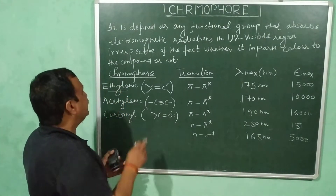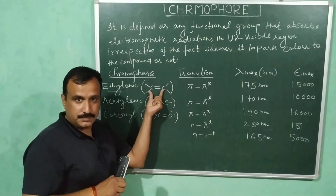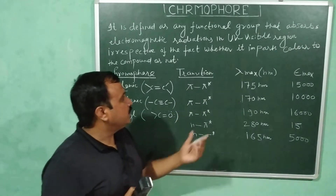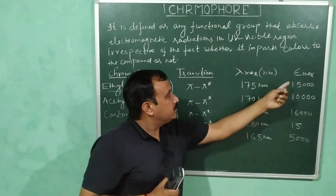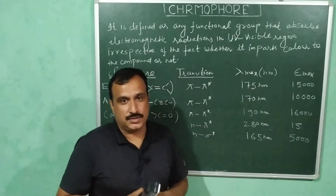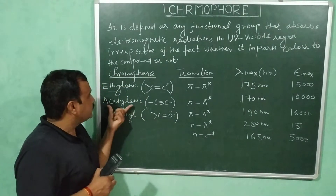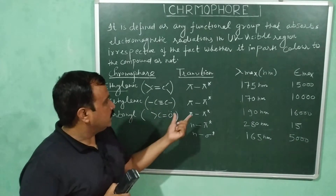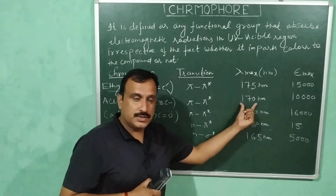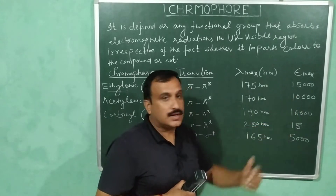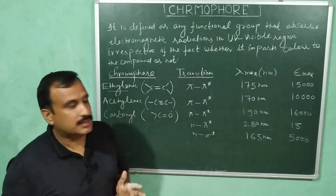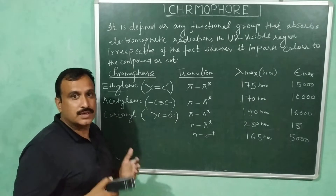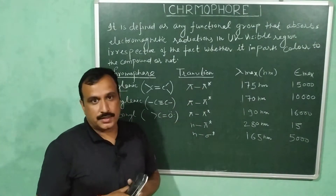The first chromophore is ethylenic, which has a carbon-carbon double bond. The transition involved is pi to pi star, and the lambda maximum for this transition is 175 nanometers, with a molar extinction coefficient of 15,000. The second is acetylinic, which has a carbon-carbon triple bond. It also undergoes a pi to pi star transition, with a lambda maximum of 170 nanometers and molar extinction coefficient of 10,000. Both these chromophores have pi bonds and therefore pi electrons, which is why the transitions involved are pi to pi star.